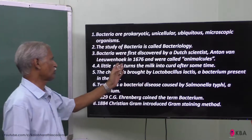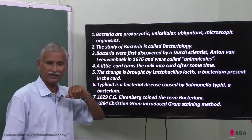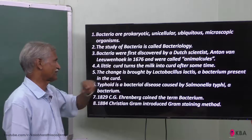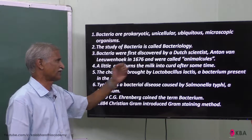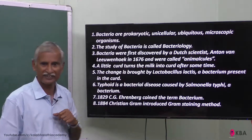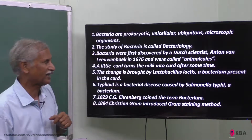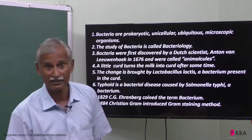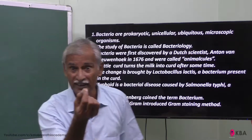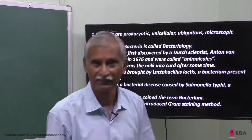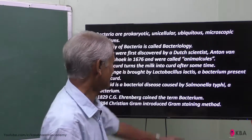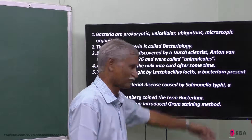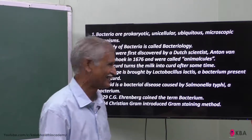Antonie van Leeuwenhoek observed bacteria in the 17th century. He named these tiny living things 'Animalcules,' meaning small animals — tiny living creatures he could observe under the microscope.